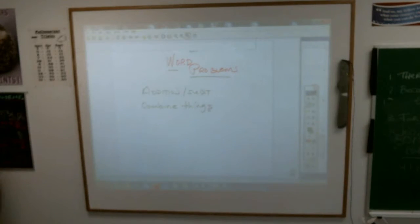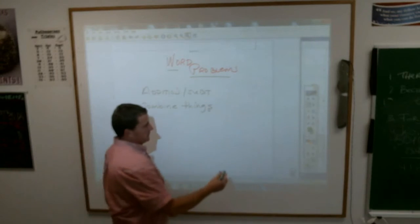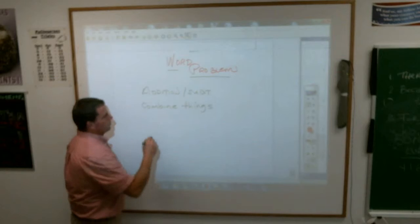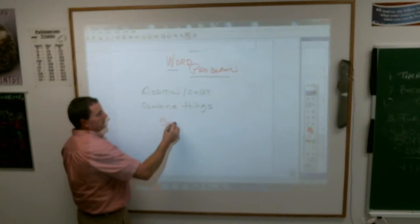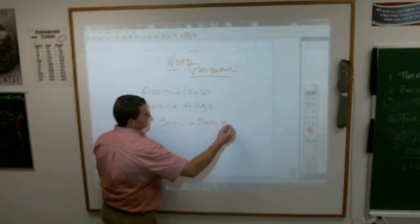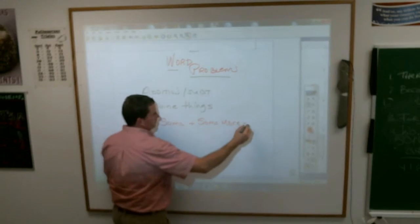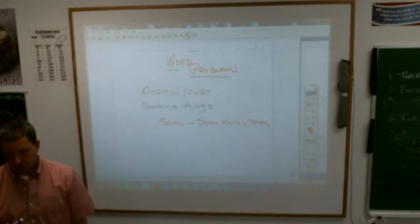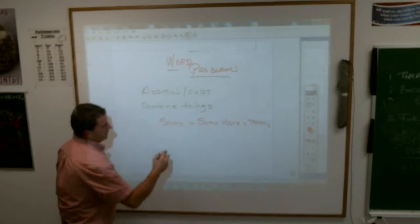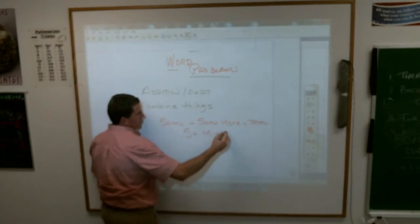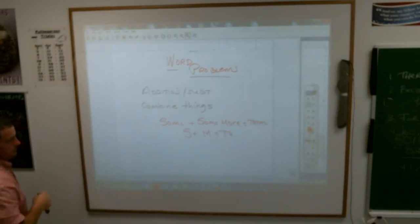When you combine things, the book says it's this type of form. It is, you have some, and then you add some more to it. And that gives you your total. So if you hear them refer to a sum plus a more problem, that's what they're talking about. They just go, sum plus more equals total. That's just kind of their just right there.